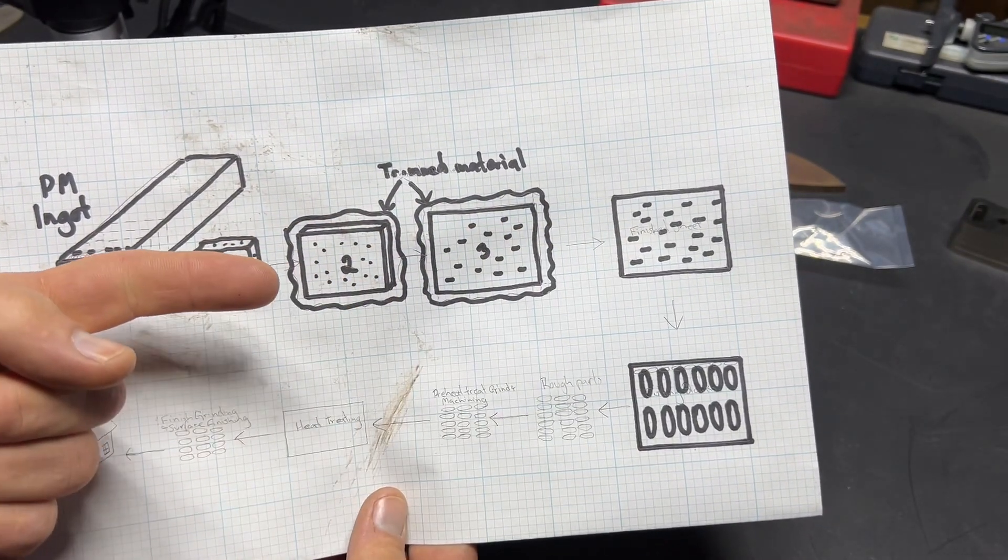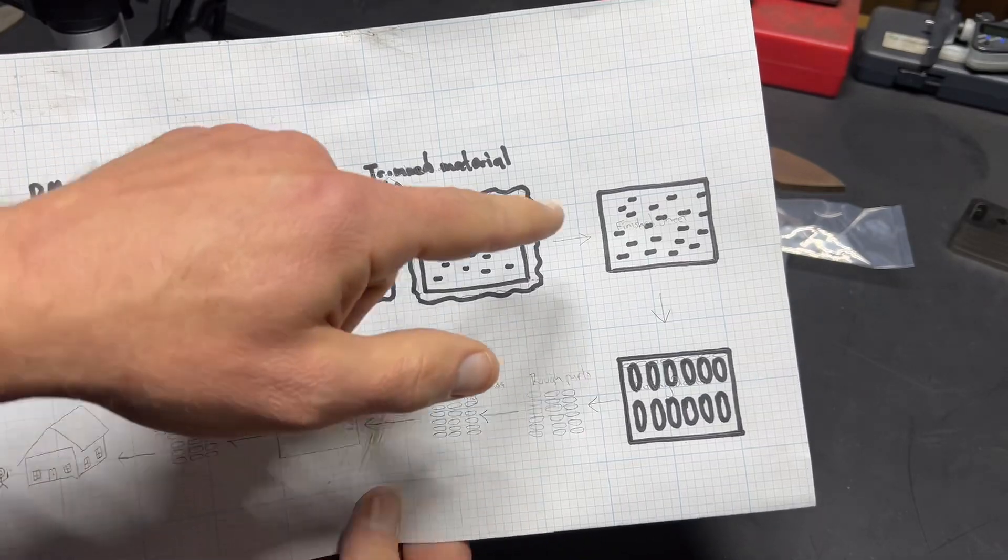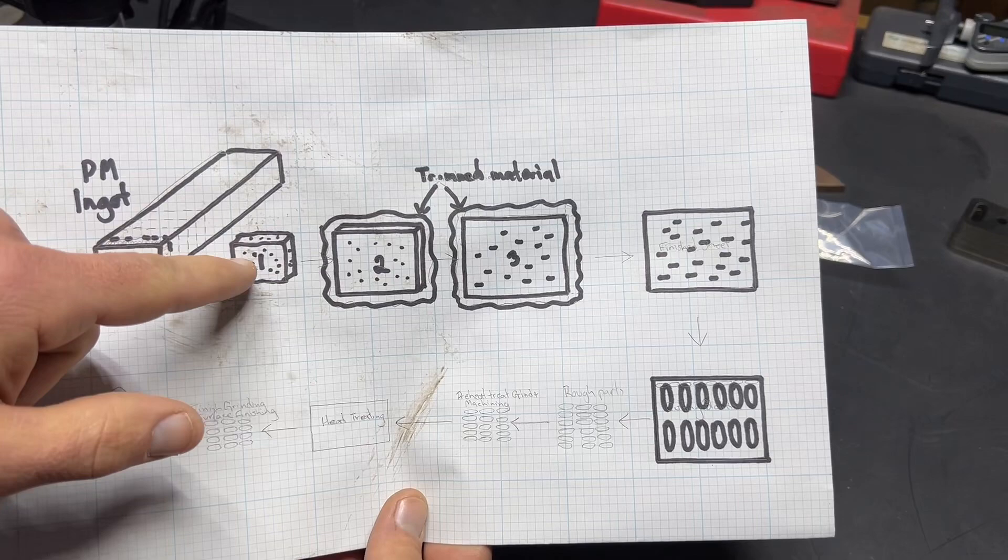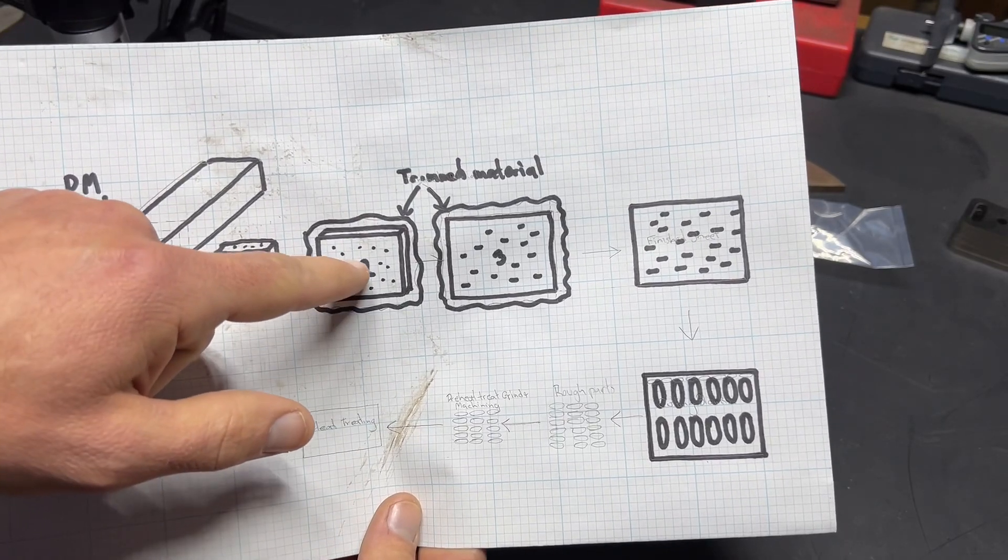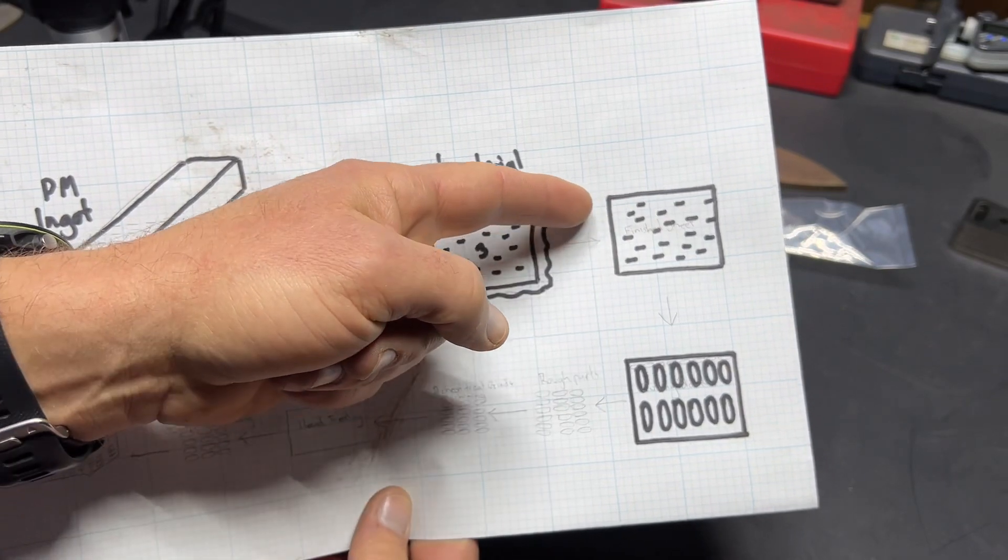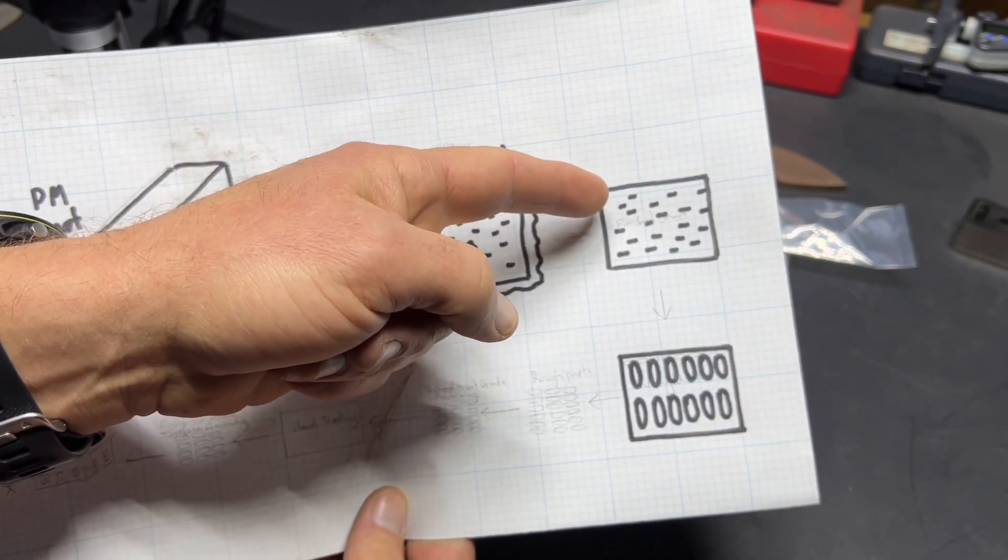The bakers and people that work with dough and stuff out there, you're going to understand what's happening here. As you start rolling this, I believe what these anomalies become elongated as you're rolling in this one direction. So they end up being the football shapes that I've been seeing in parts.